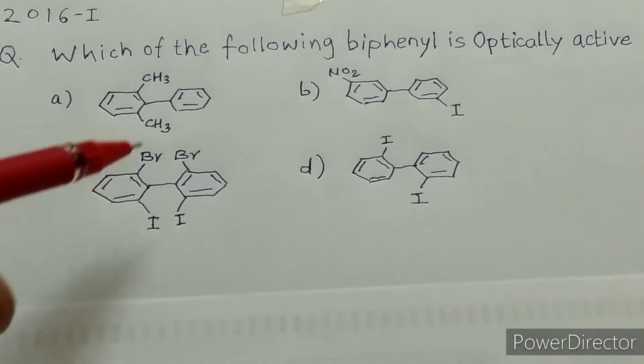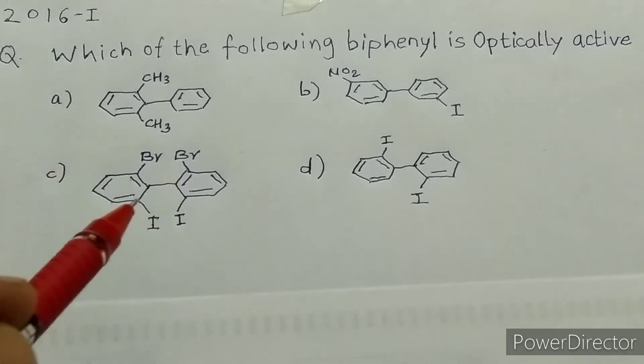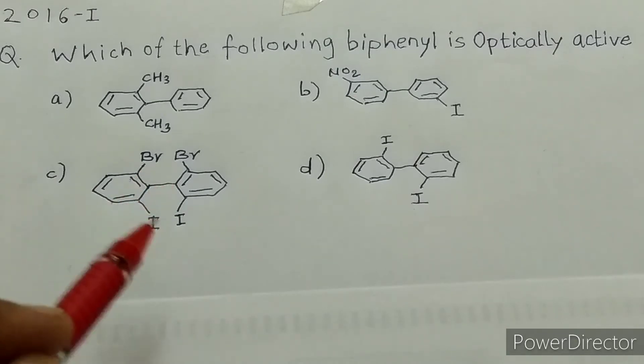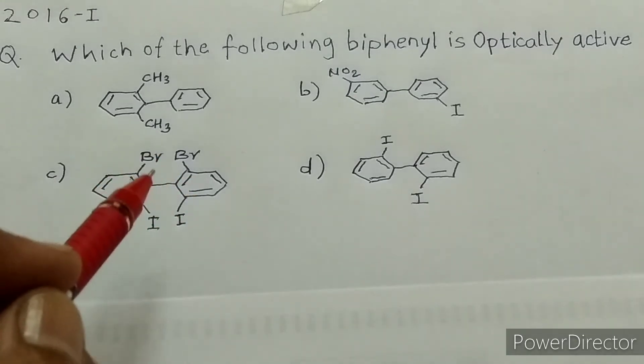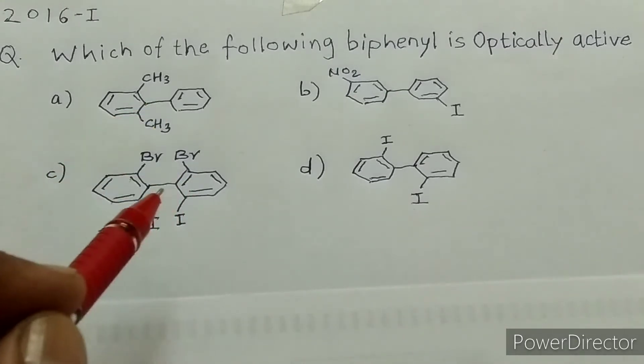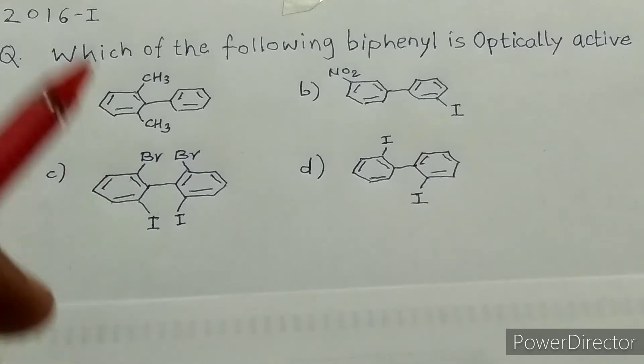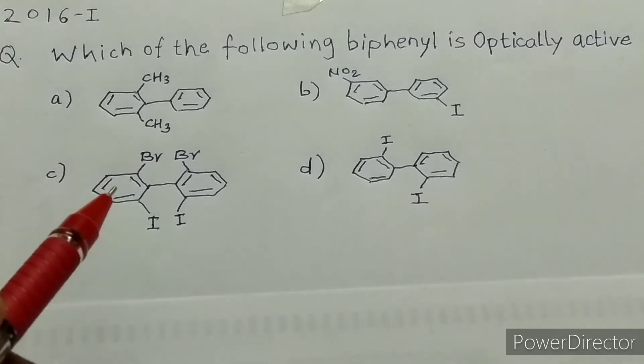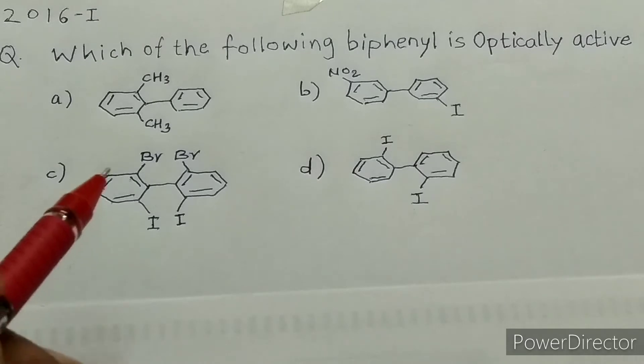Bulkier groups present on the ortho position make the molecule non-planar. The molecule loses the plane of symmetry. These two rings go out of plane, and the molecule becomes a non-superimposable mirror image of each other.